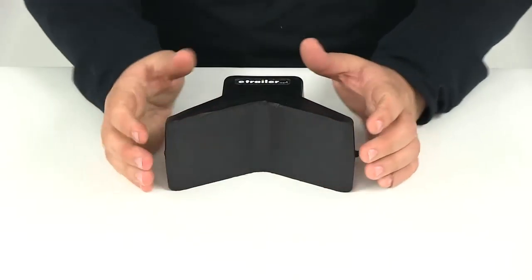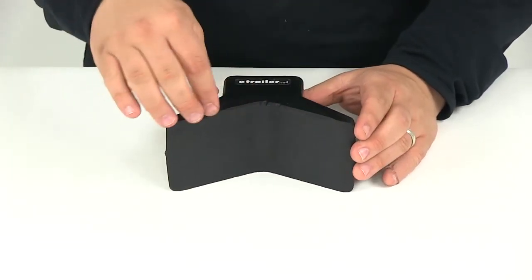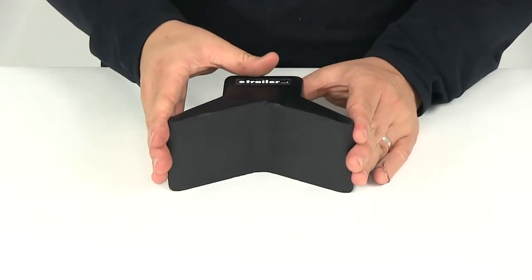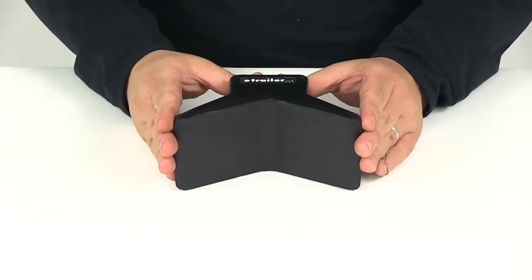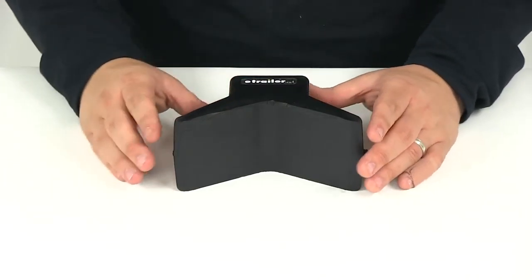This is a bow stop, also known as a Y-stop because of its shape, and it will cradle the bow of your boat. The rubber construction ensures it doesn't cause any harm or damage to the finish or surface of your boat.